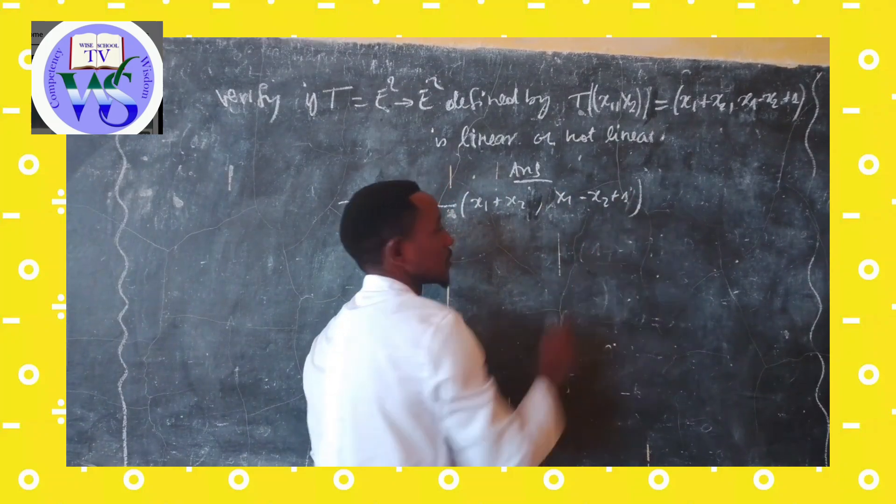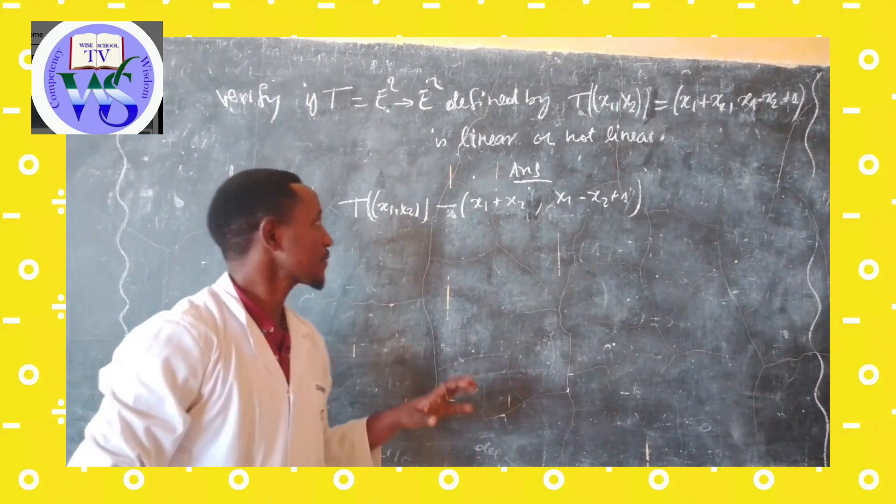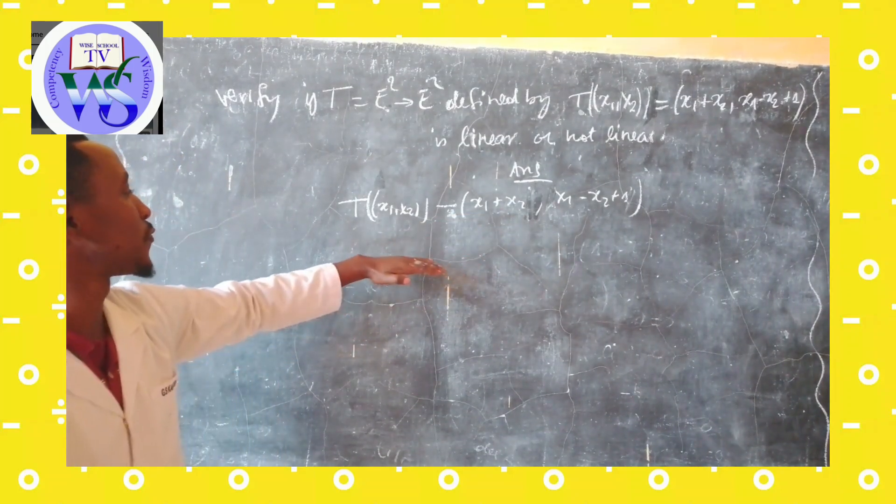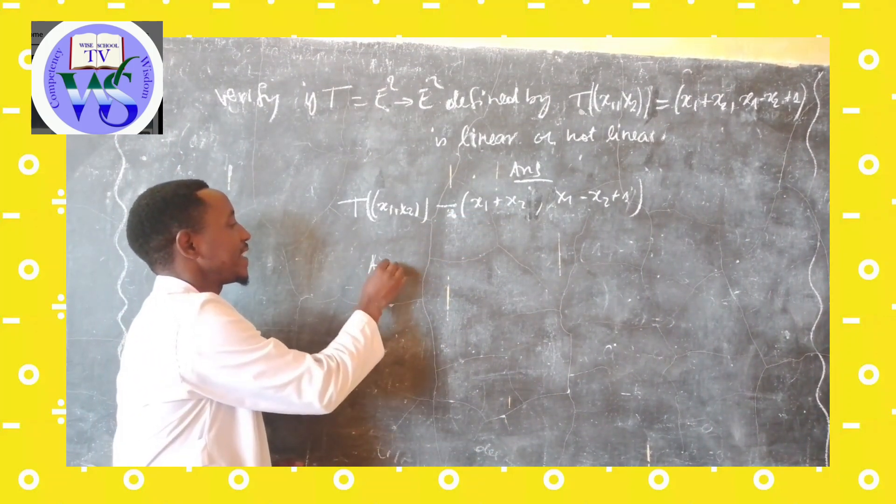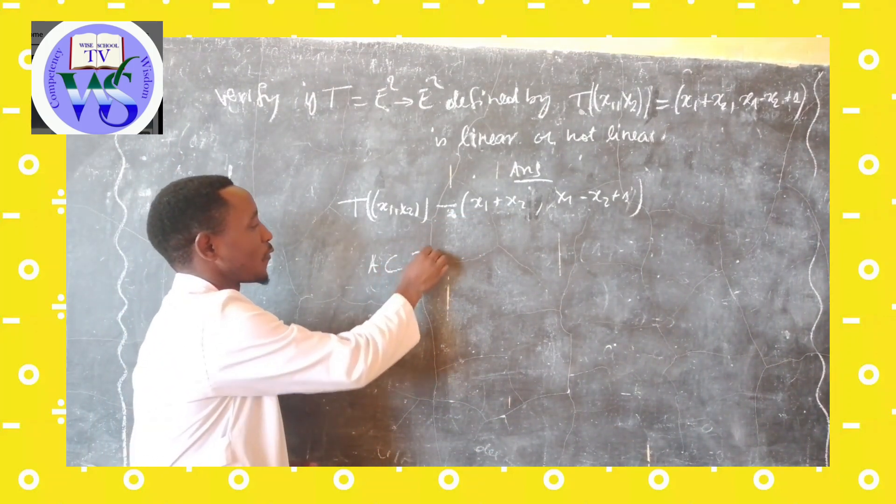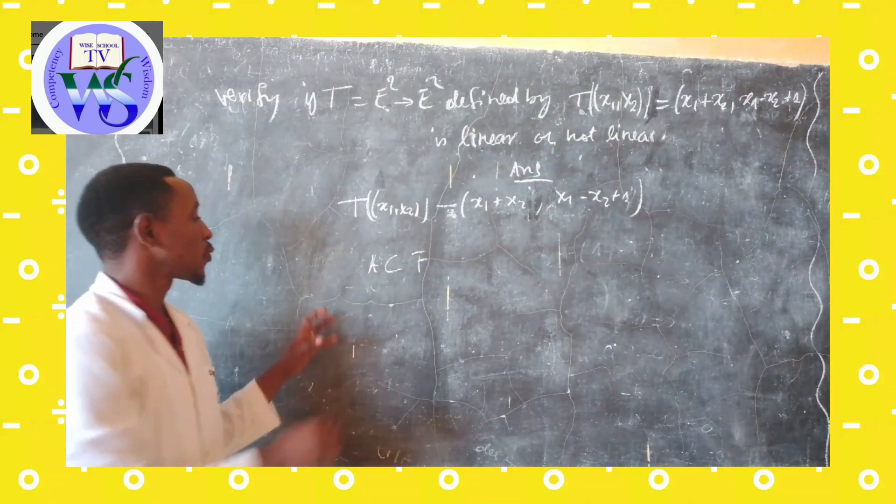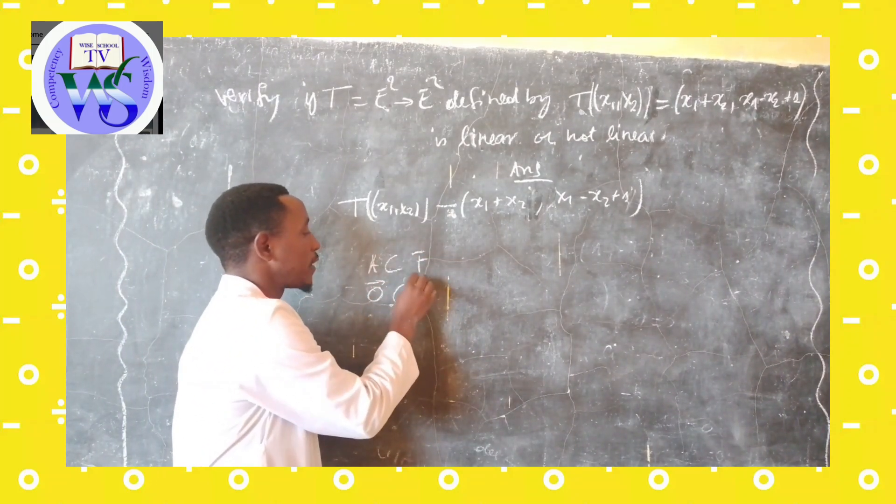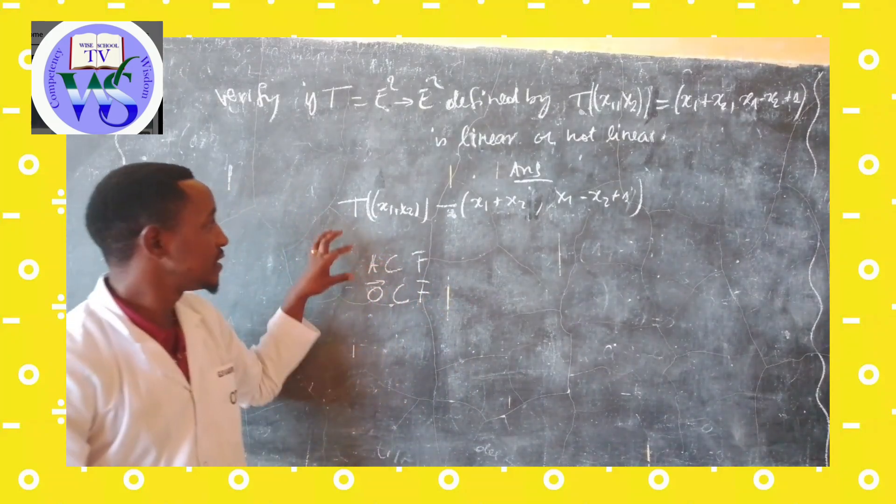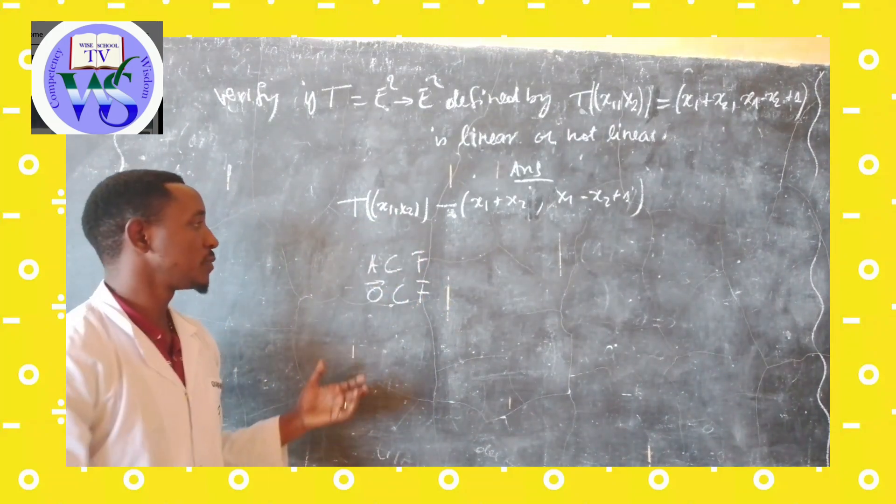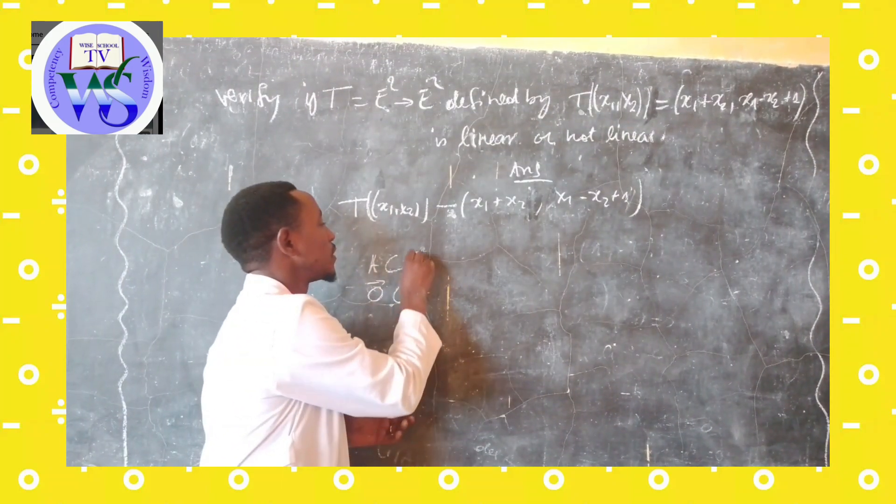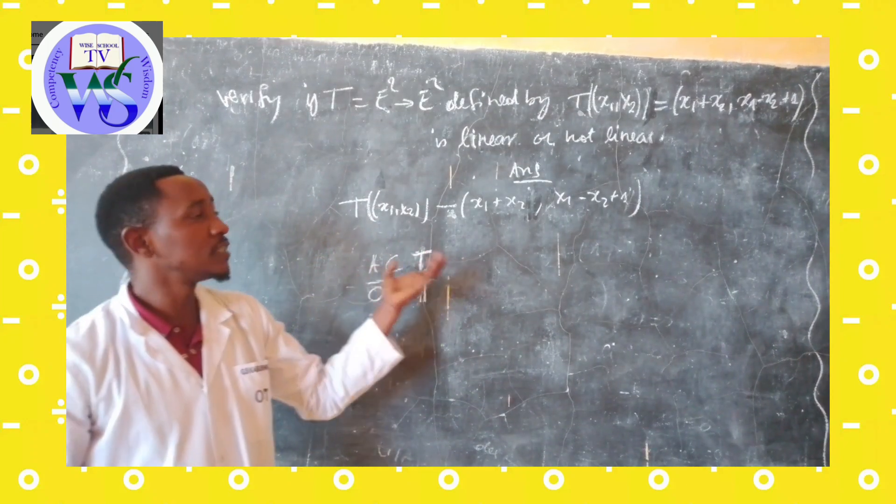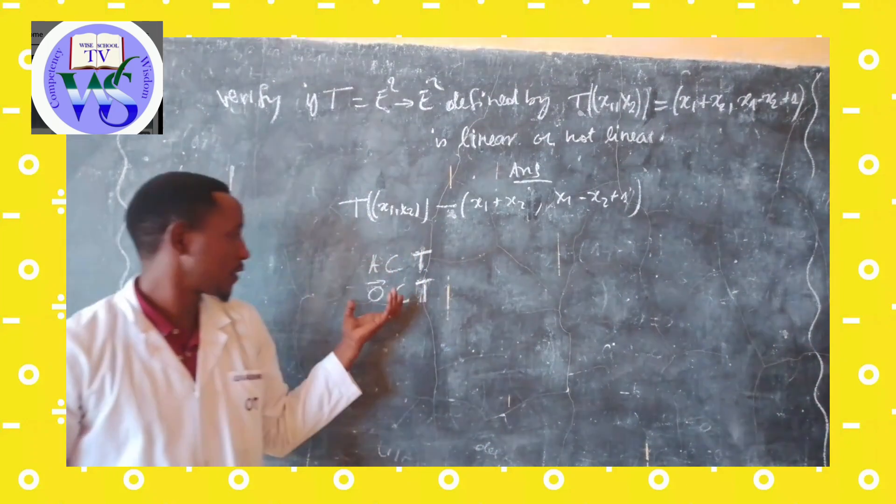So this transformation, it is a linear transformation if A is a subset of F and also the zero vector is a subset of F. According to our transformation, F is equal to T. So then, let's check. For that there is no question, but let's check for that.